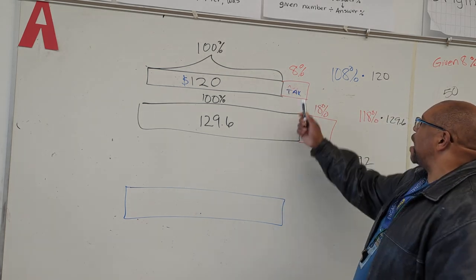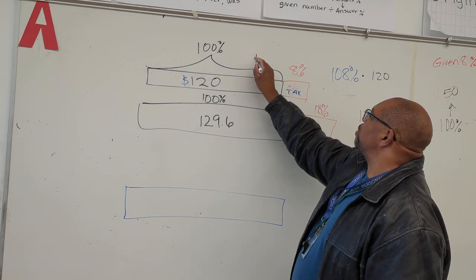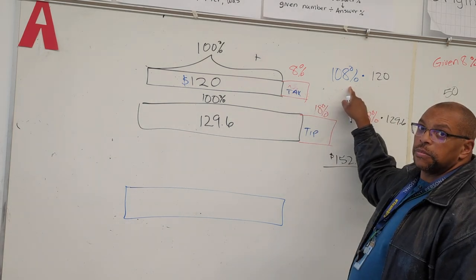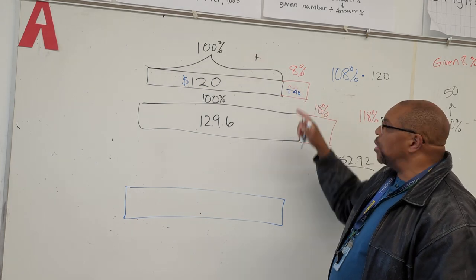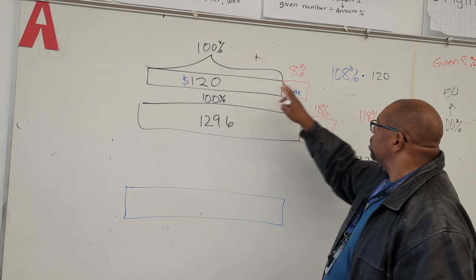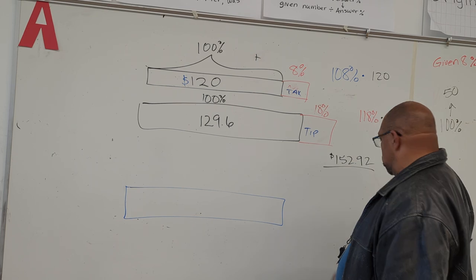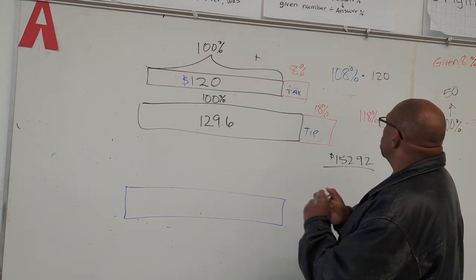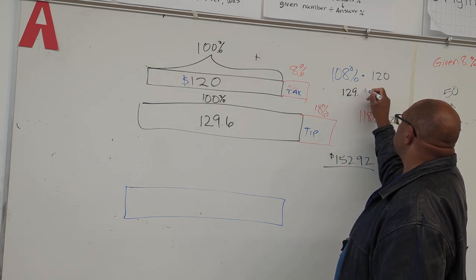So when we do that, we add 100 plus 8% and we come up with 108%. Now we don't know what the tax is yet, but we can figure it out. So we take 120 times 108% and when we do that, we come up with $129.60.